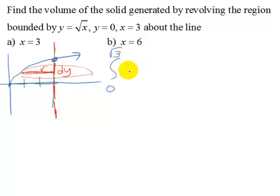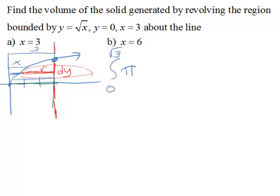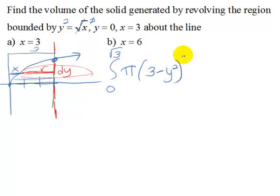Expressing the area of a disk, it's going to be pi r squared. We can see that wherever we make the slice, our r is going to be 3 minus the x value, which gives us the radius. We want to express this in terms of y, so squaring both sides gives x equals y squared. So the radius is going to be 3 minus y squared, and then squared. This is the area of a disk, pi r squared, and then we multiply by little thickness dy.